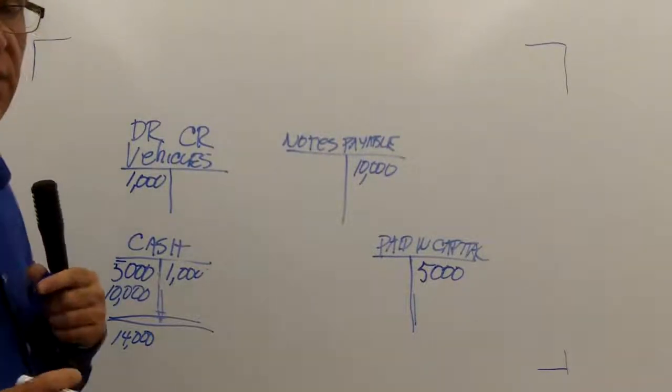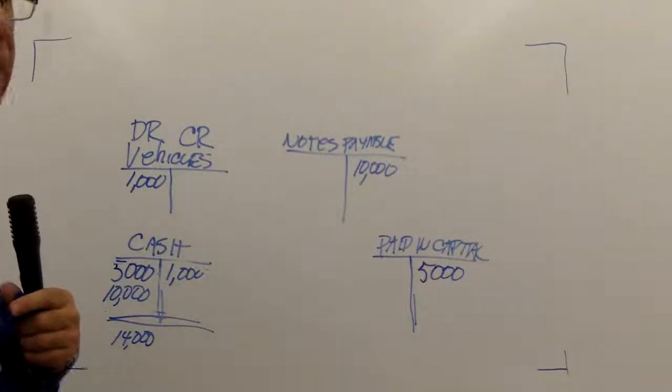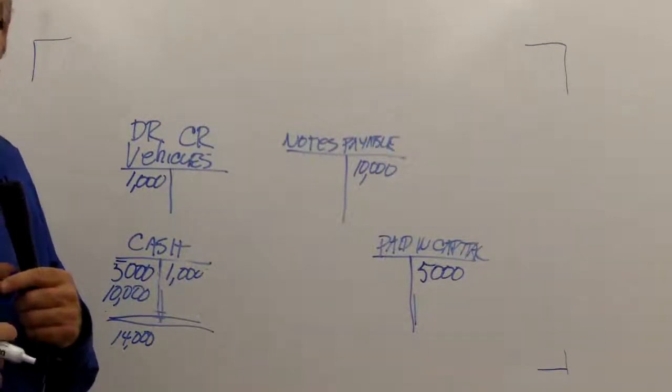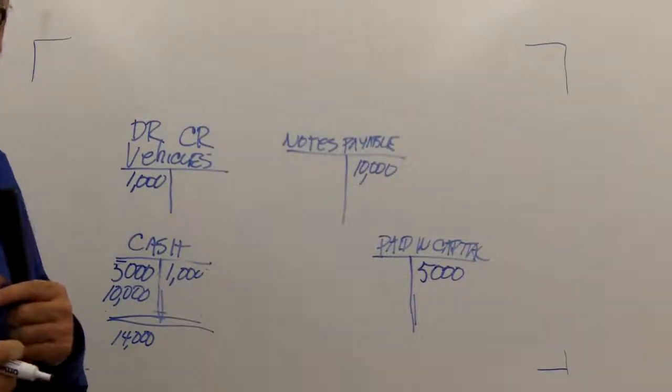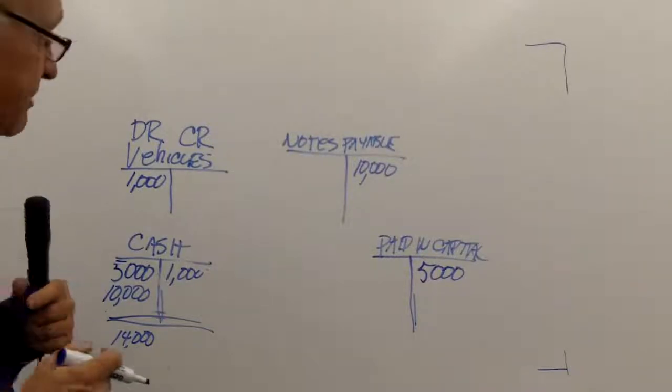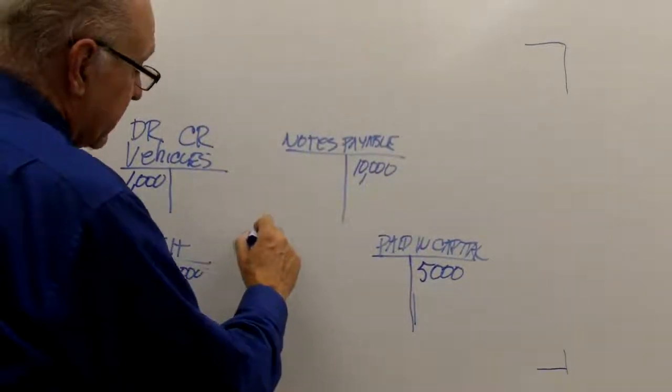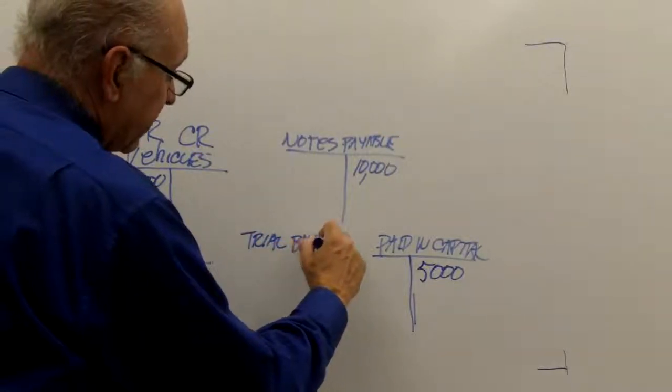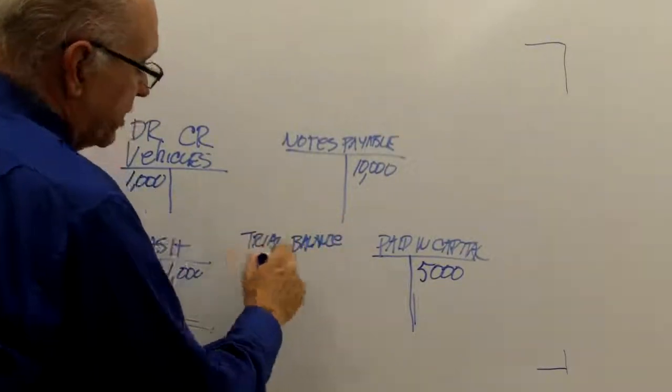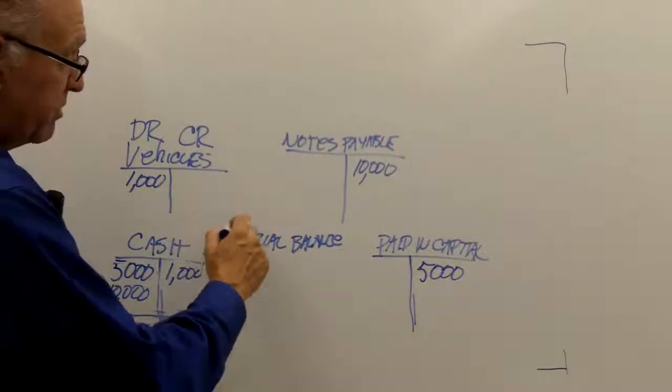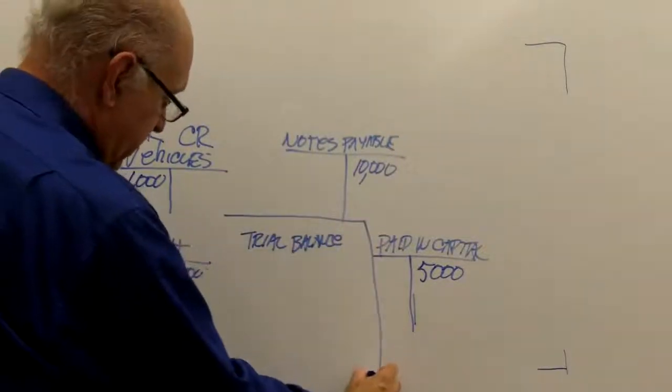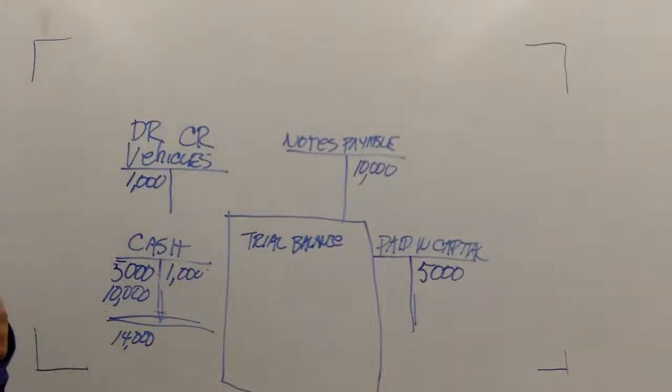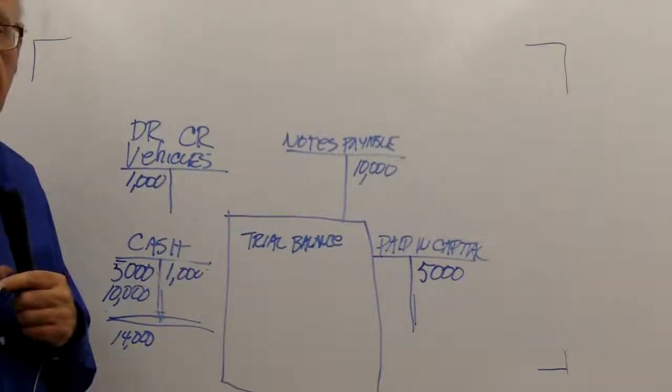One of the techniques that I use in accounting to ensure that I am always in balance is something called a trial balance. And it's called a trial balance because we're trying to balance. And if I just put that in the center here, let's take a look at what that is. So I'm going to make a little trial balance here. Let's imagine that I have a piece of paper, a report that I'm putting out. In my trial balance, I list all of my accounts.